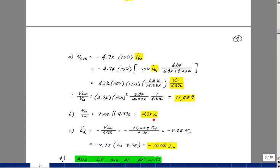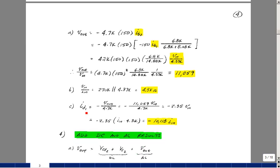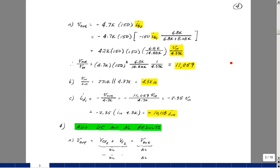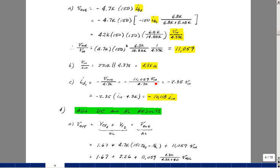The input impedance is just the 270 K in parallel with the 4.37 K. So very close to the 4.37 K. The current in the LED, this is AC wise, the biasing is the same as the collector current of transistor 2, is going to be equal to V out divided by 4.7 K. But it was pointing in the opposite direction here. So it's going to be a negative of what this voltage is here. Well, V out is 11,059 times V in. So it's going to give us a value of minus 2.35 times V in.